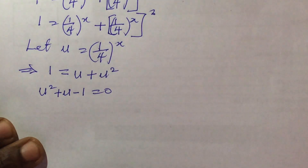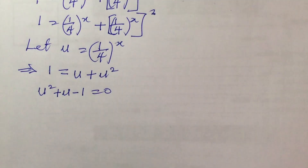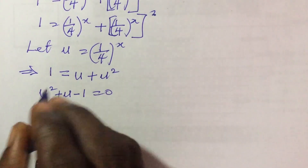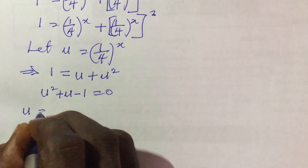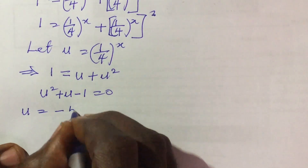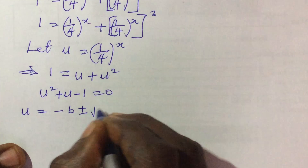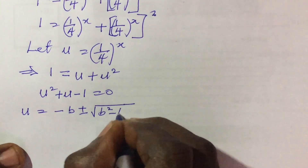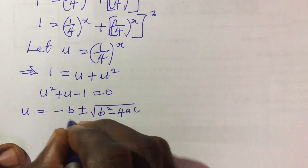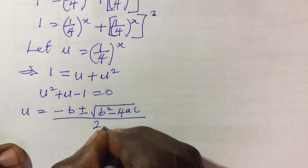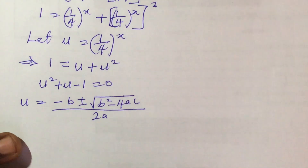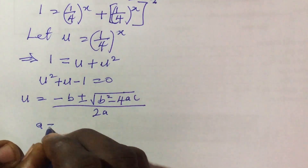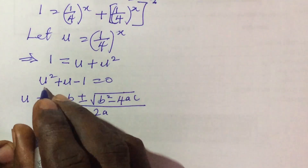So if we rearrange this it will give us u squared plus u minus 1 equals 0. We can solve this quadratically using the quadratic formula: u equals minus b plus or minus the square root of b squared minus 4ac, all over 2a. From the expression above we have a equal to 1.